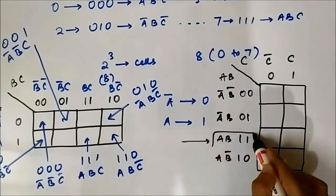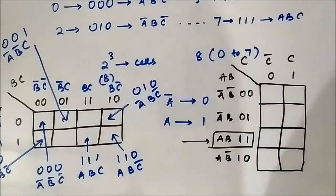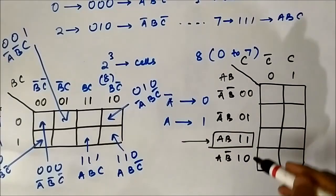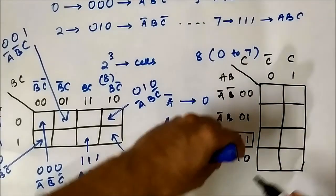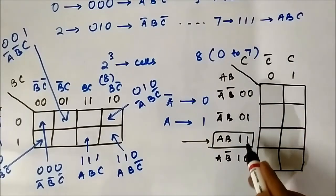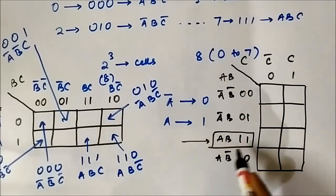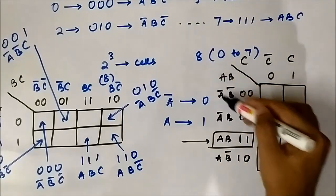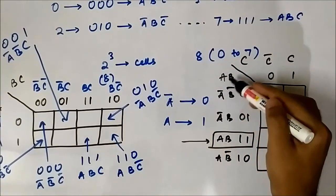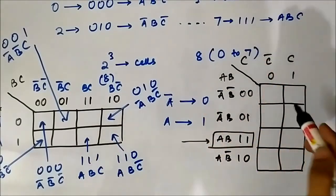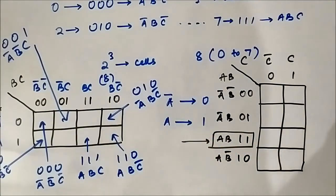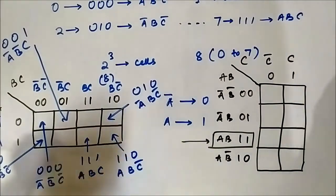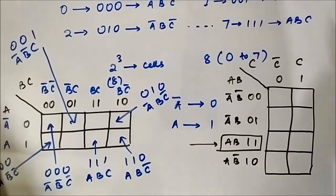So here the sequence will be 0,0 — 0,1 — 1,1 — 1,0. Most of the time beginners make a mistake here — they keep it serially as 0,0 — 0,1 — 1,0 — 1,1. But the correct sequence has a change: 0,0 — 0,1 — 1,1 — 1,0. Always be careful about this part.